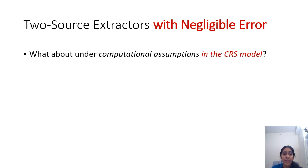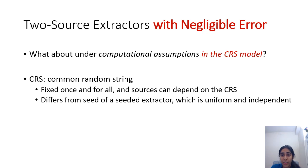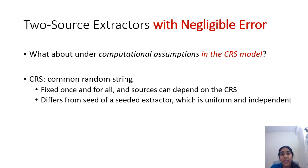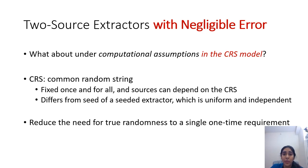Therefore, we introduce another relaxation: the common random string (CRS) model. This involves a trusted setup phase, where a random string is sampled uniformly and fixed once and for all. Then the source distribution can be sampled arbitrarily, depending on the common random string. This differs from the setting of seeded extractors, where crucially the source and seed are independent. What this model basically does is reduce the need for true randomness to a single one-time requirement on the common random string, and crucially, sources are now allowed to depend on this string.